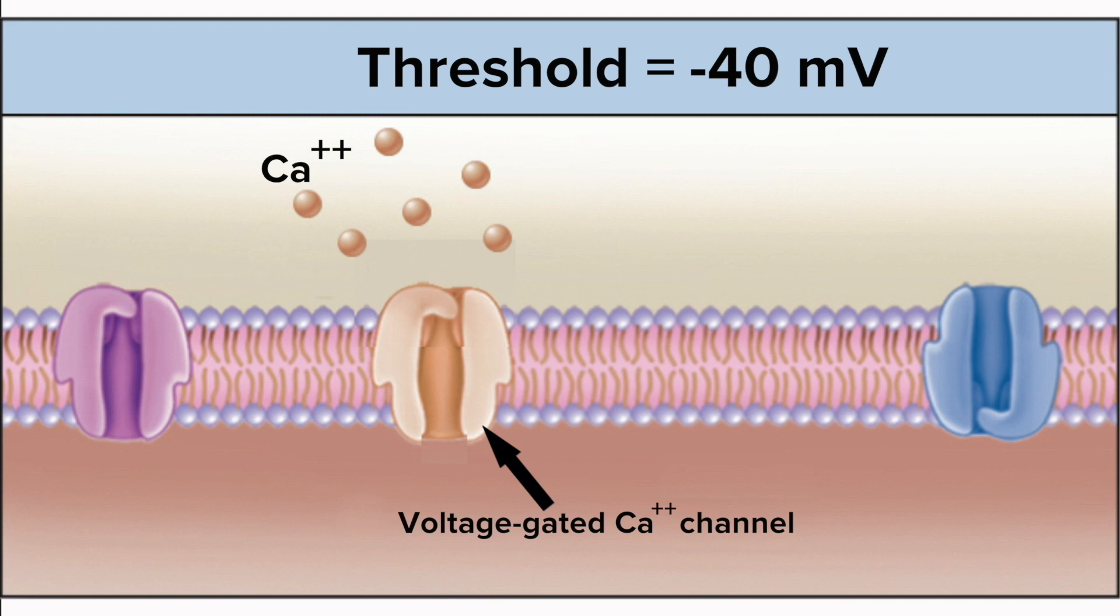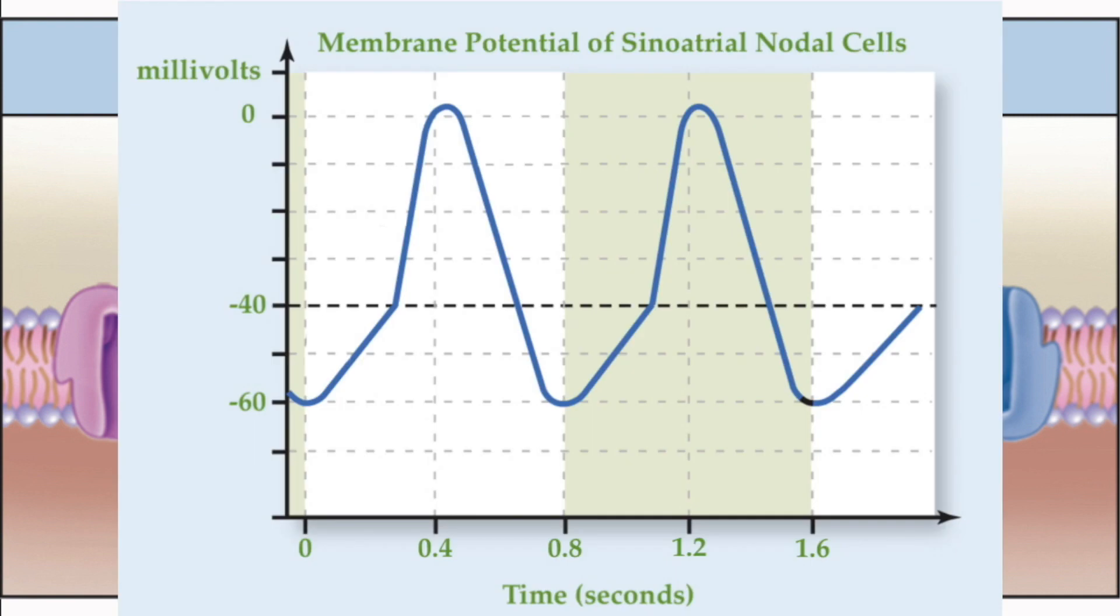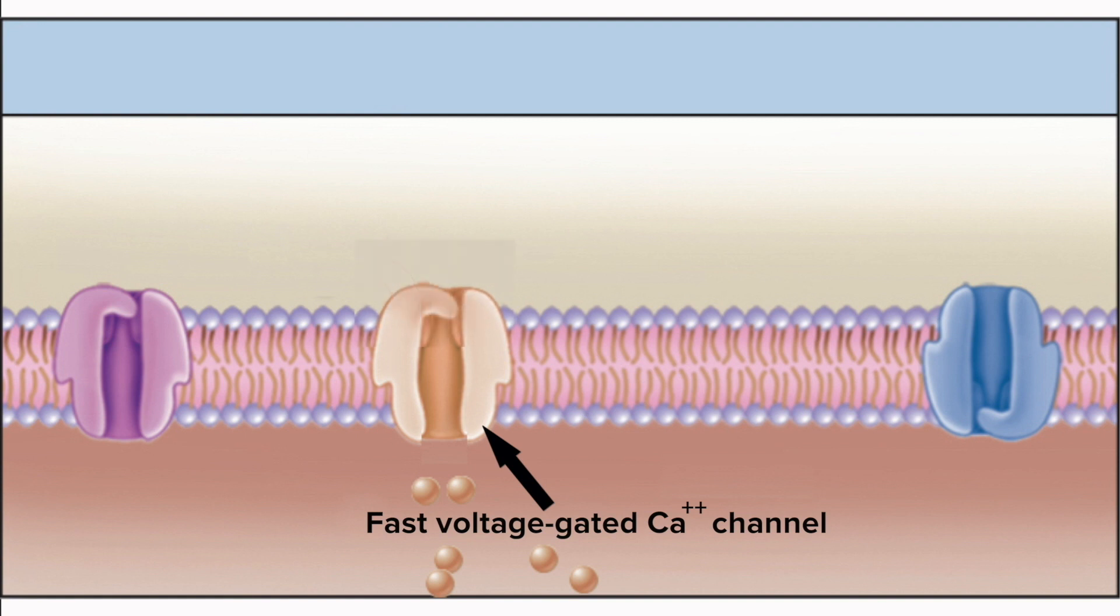And when the nodal cell's membrane potential reaches that threshold, it opens, and calcium ions, which are higher in concentration outside the cell, rush in very quickly down their concentration gradient. That's why they're called fast voltage-gated calcium ion channels. This influx of ions with a charge of plus 2 causes a rapid depolarization that reaches just above zero millivolts, at which point the calcium ion channels close and the influx of calcium ion stops.